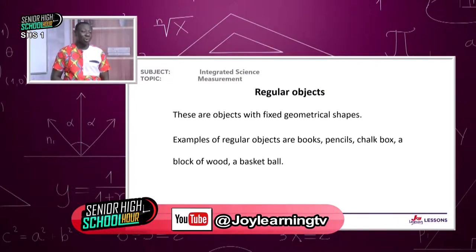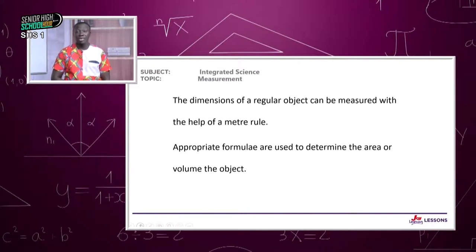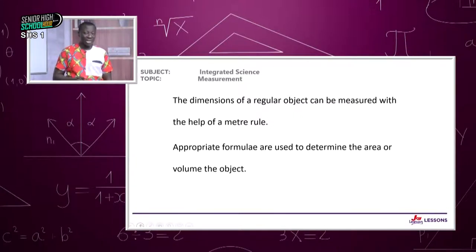Examples of regular objects include a chalk box, cylinder, books, pencil, block of wood, basketball, or football. The dimensions of a regular object can be measured with a meter rule. Don't forget vernier calipers, micrometer screw gauge, and the spherometer for measuring distance and shape.